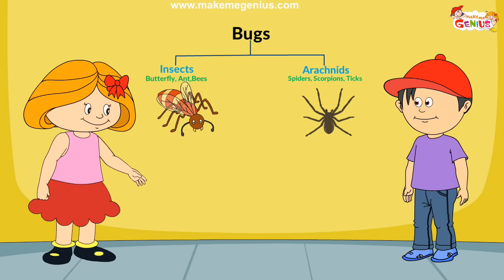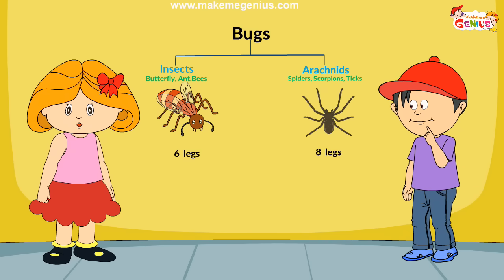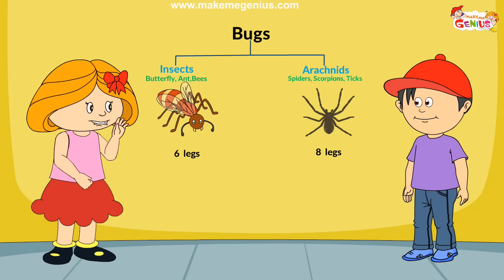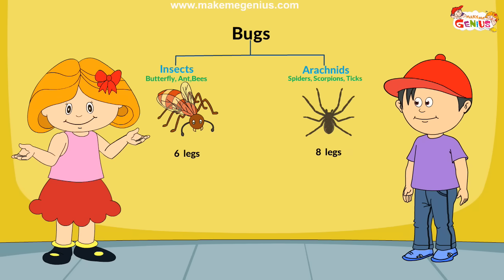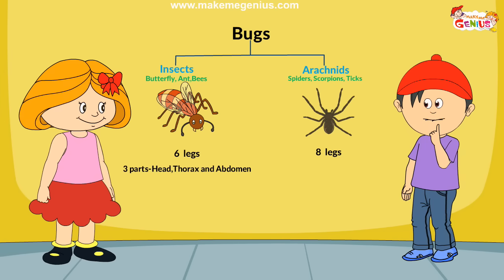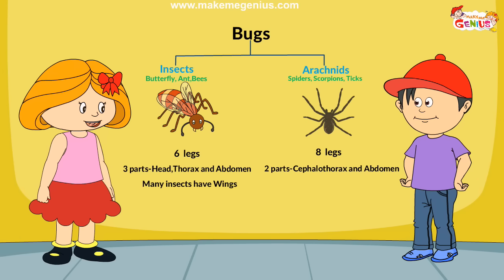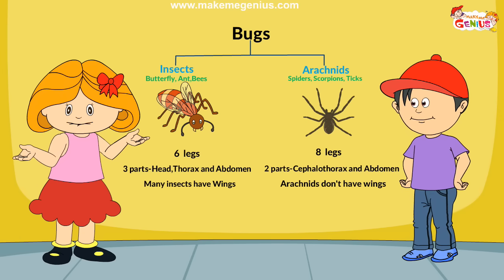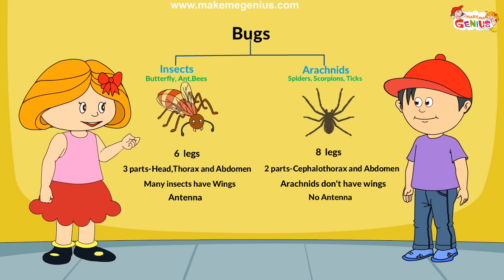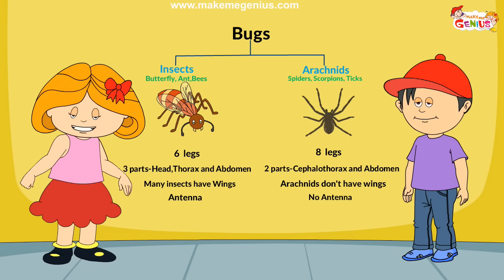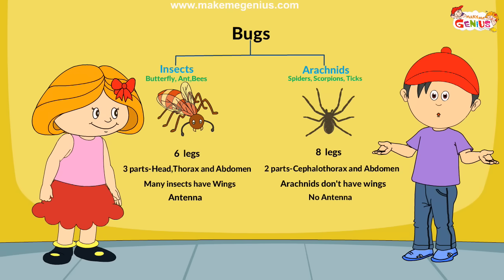So it is different from the ant and the butterfly. Bugs are of two types: insects and arachnids. Bugs having eight legs are known as arachnids. Apart from spiders, scorpions and ticks also have eight legs. Insects have three body parts whereas arachnids have only two. Most insects have wings but none of the arachnids have wings. Insects have antennae but spiders do not.